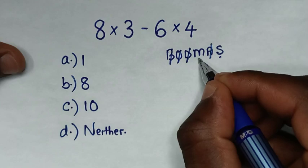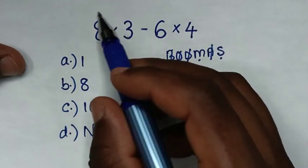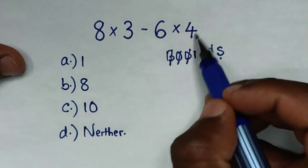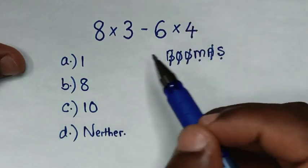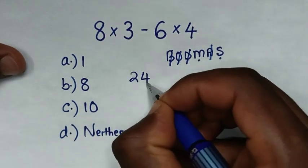So, from this multiplication, whereas we have two multiplications, we start to deal with this first multiplication, then this second multiplication. Whereas from the first multiplication of 8 times 3, it is 24.